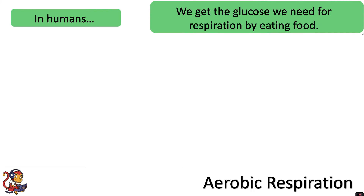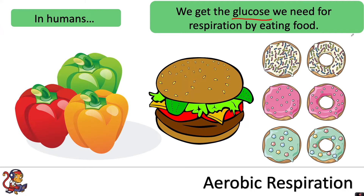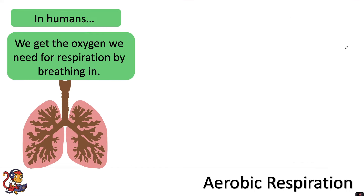In humans we get the glucose needed for respiration by eating food — the main sources are sugars and carbohydrates. We get the oxygen we need for respiration by breathing in.